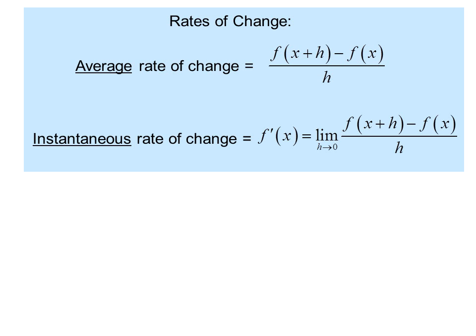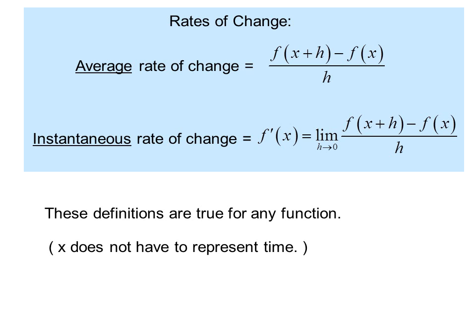Rates of change. Average rate of change equals f of x plus h minus f of x over h. Instantaneous rate of change equals f prime x, or the limit as h goes to zero, of f of x plus h minus f of x over h. These definitions are true for any function. X does not have to represent time.